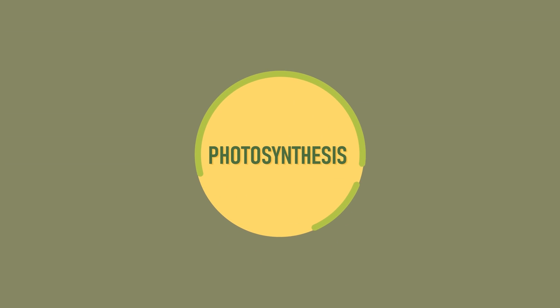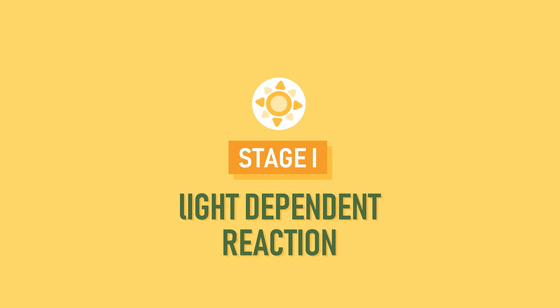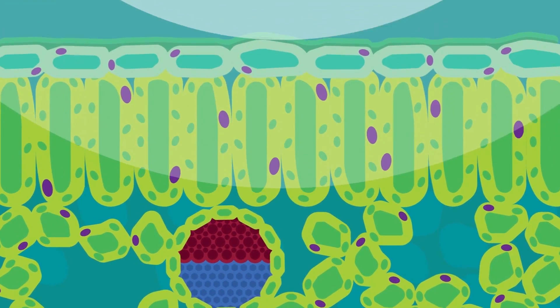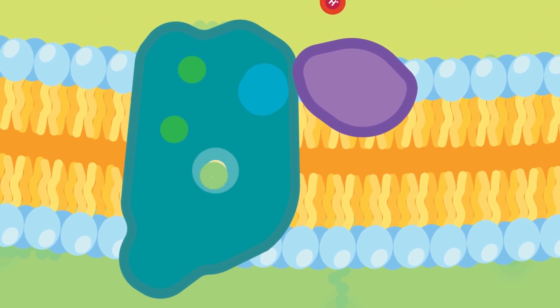Photosynthesis goes through two stages. Stage 1 – Light Dependent Reaction. This reaction depends on the presence of light. It starts when photons from sunlight strike the leaf, enter all the way through to the chloroplast and its thylakoid disks, excite the chlorophyll, and activate electrons.